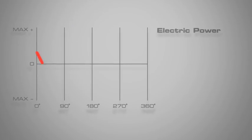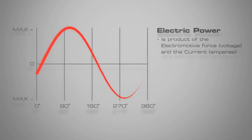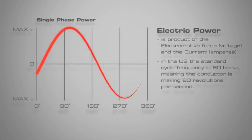Electric power is the product of the electromotive force measured in voltage and current measured in ampere. When we evaluate a single waveform, we can see it is not a constant power source. This type of single sinusoidal waveform is known as single phase power.